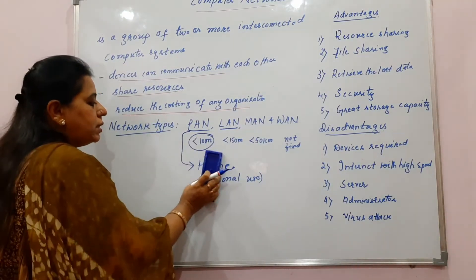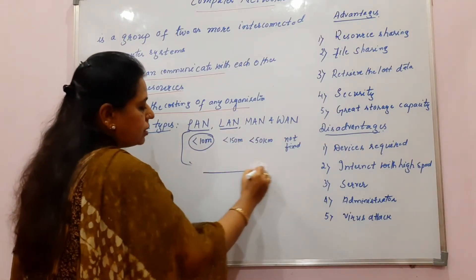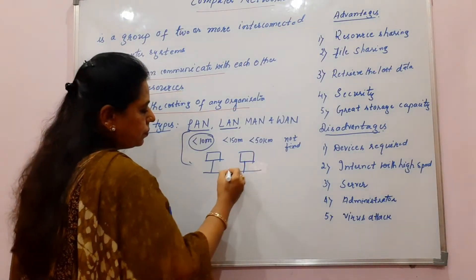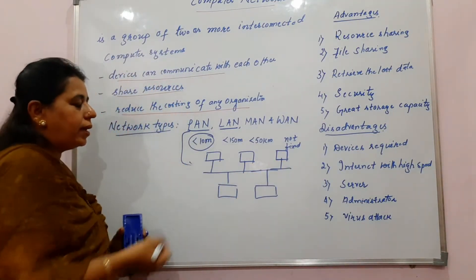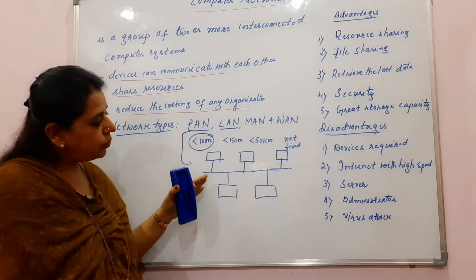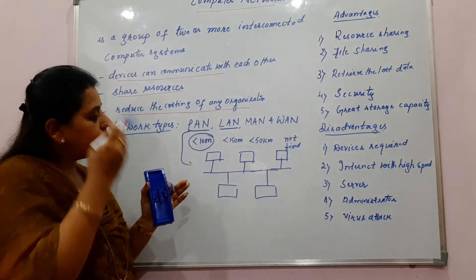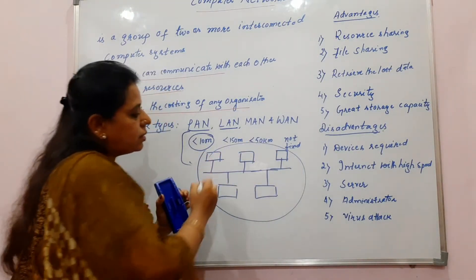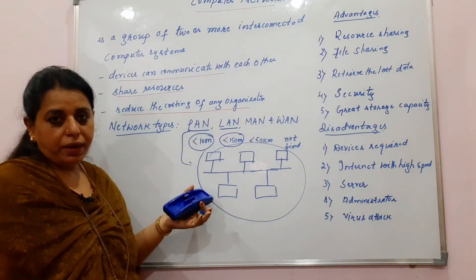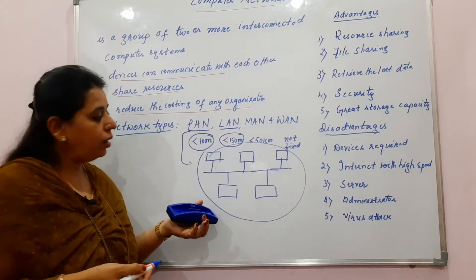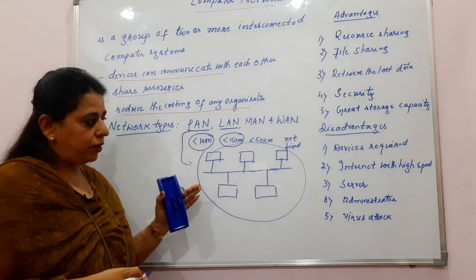The next type of network is LAN — Local Area Network. This is used in any small organization, office, library, school, or hospital where systems are connected with each other. The systems are connected in a particular fashion within the organization and the devices can communicate only within the organization. The range for this particular network is less than 150 meters, so it can work in a school, college, hospital, or library.